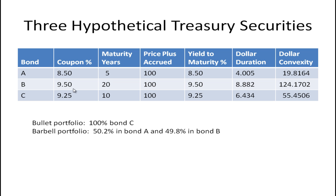Bond B has a 9.5% coupon and matures in 20 years. Bond C has a 9.25% coupon and matures in 10 years. So the bullet strategy would be to buy Bond C, and the barbell strategy is to buy Bonds A and B. Fabozzi worked out that if you put 50.2% in Bond A and 49.8% in Bond B, you'll have the same dollar duration as the bullet strategy.